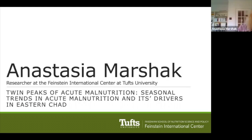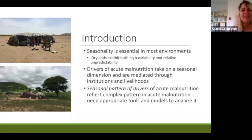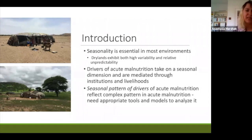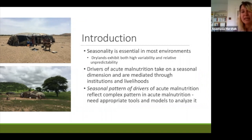Thank you, Saveria, for that introduction. As we've heard from the other panelists, seasonality is an essential feature in most environments, but it's particularly stark in dry lands, from both a perspective of high variability in terms of temperature, precipitation, and vegetation, but also relative unpredictability. For example, the start of rains can differ by almost two months depending on what year of data you're looking at in places like Chad, Sudan, and South Sudan.